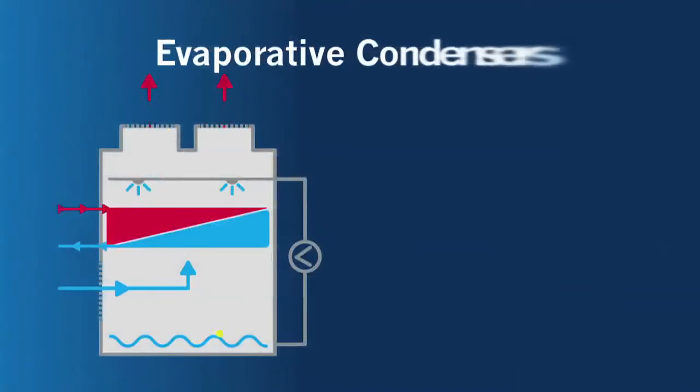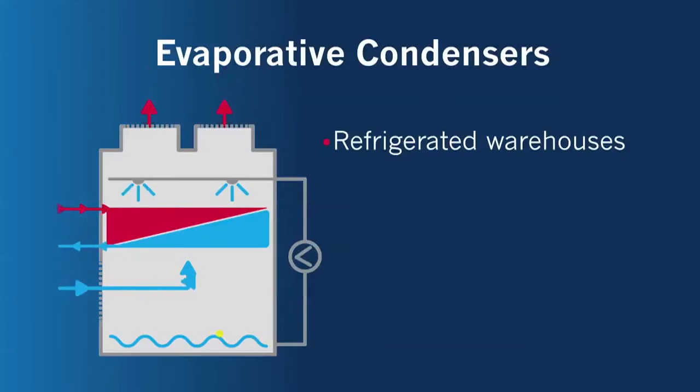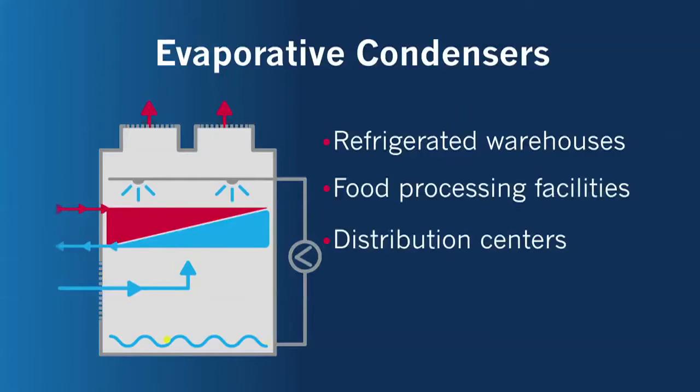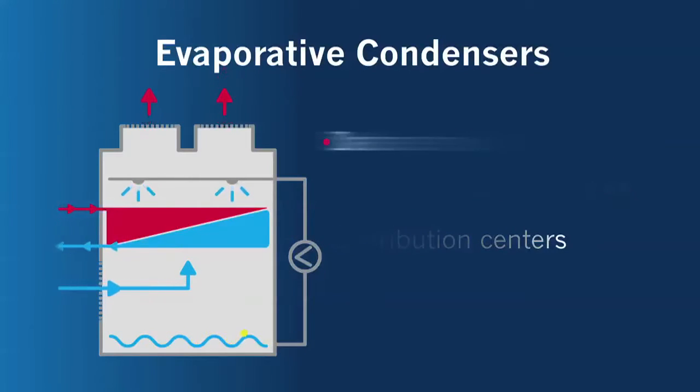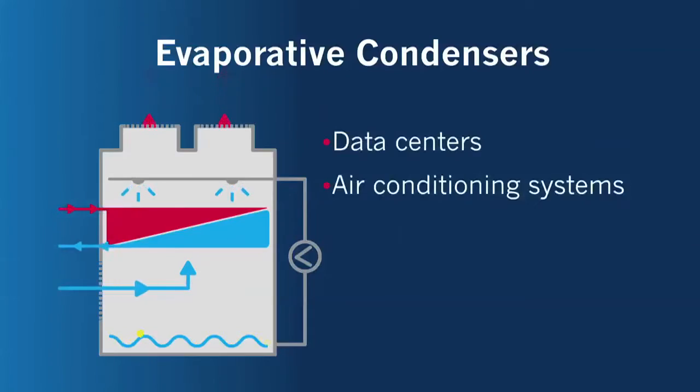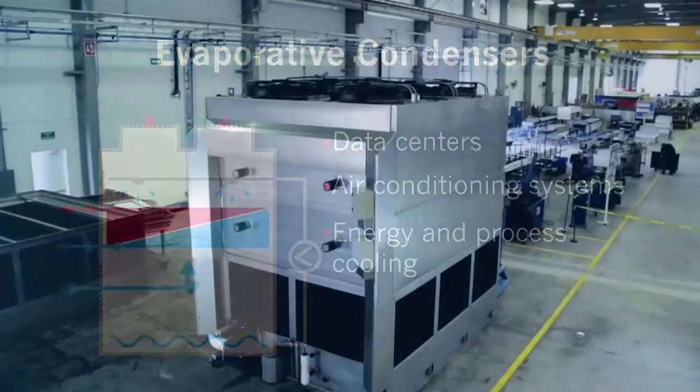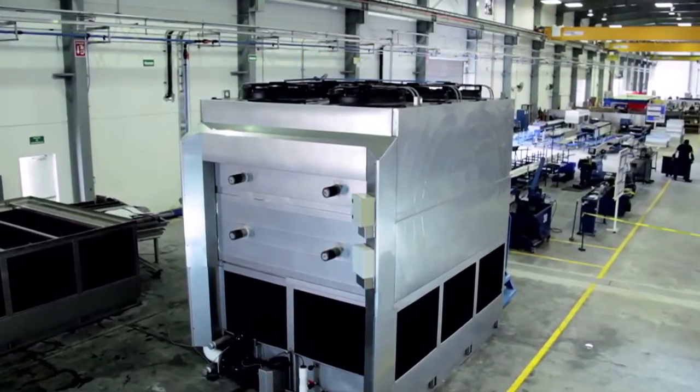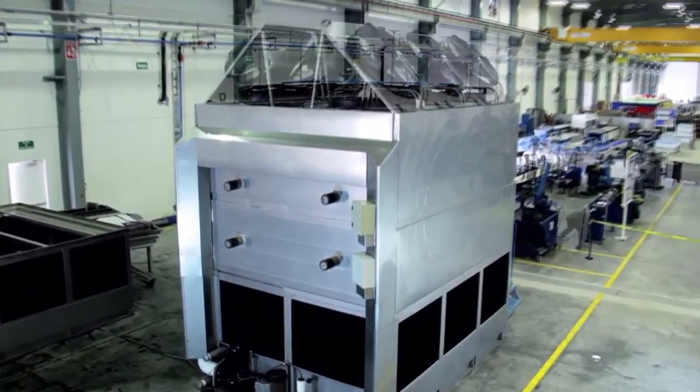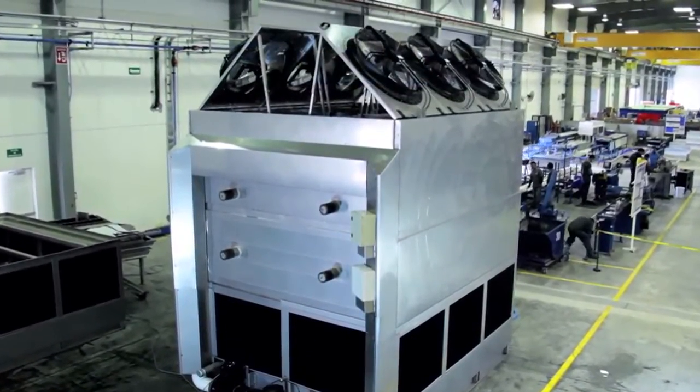Evaporative condensers are mainly applied in industrial refrigeration applications for refrigerated warehouses, food processing facilities, and distribution centers. Other highly attractive applications include data centers, air conditioning systems, and energy and process cooling.